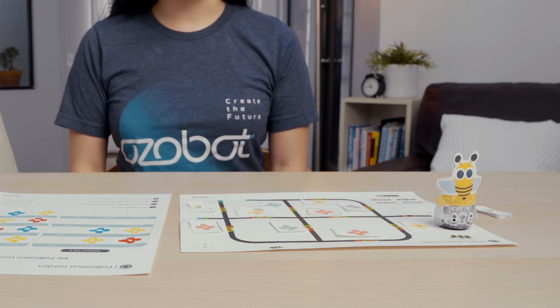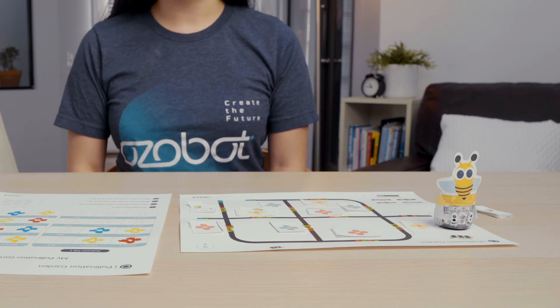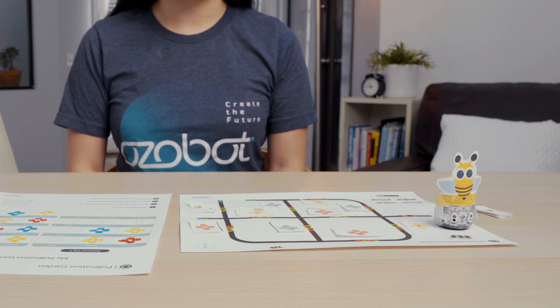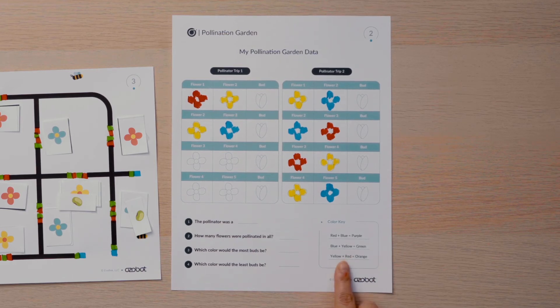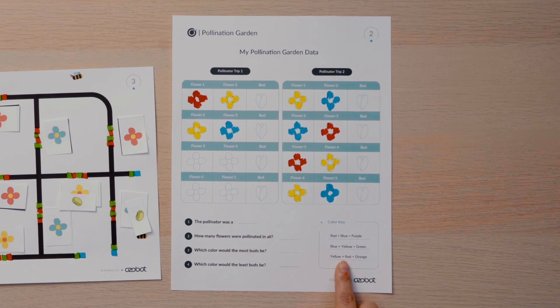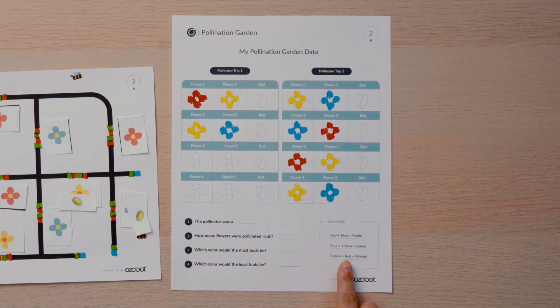Now you can analyze or look at your data to have fun with colors and make predictions. At the bottom of your pollination garden data sheet is a color key. The key shows you when the primary colors are mixed together a new secondary color is made. You will use this key to predict what colors the baby flowers or buds in your garden would be after the seeds grew.